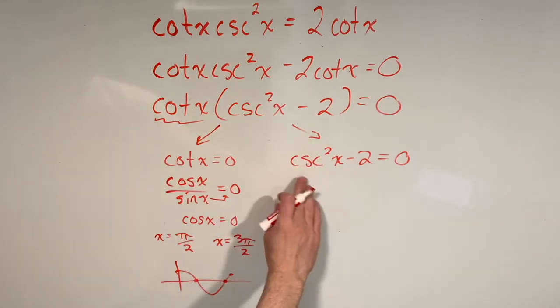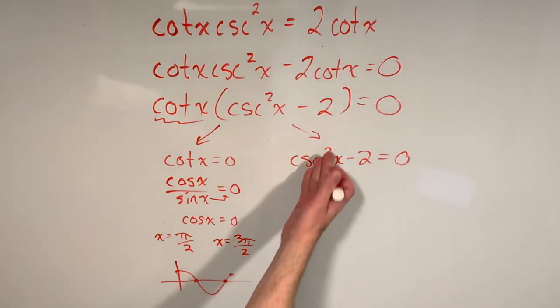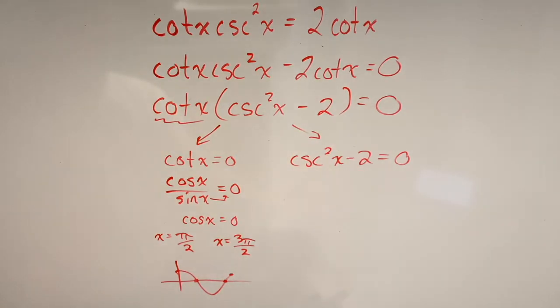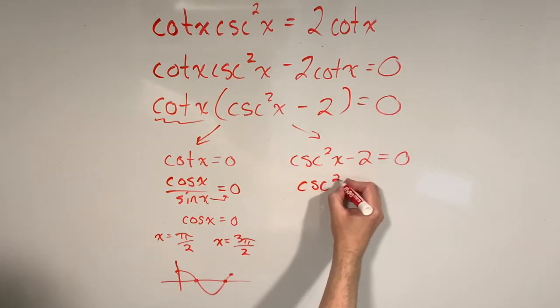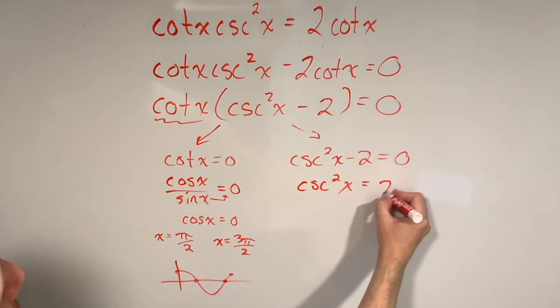Now what we're going to do next is go over to this branch where we have cosecant squared x minus two equals zero. Now this one's going to be a little bit more complicated because we're working with a squared, and we also have this minus two that we should take care of first. So we can do that just by bringing the negative two over to the other side by adding. That's going to leave us with the cosecant squared of x equal to two.